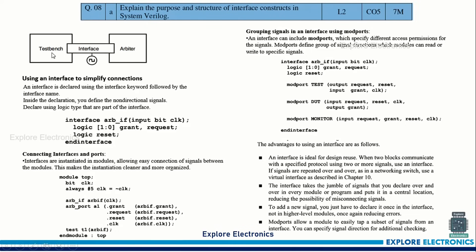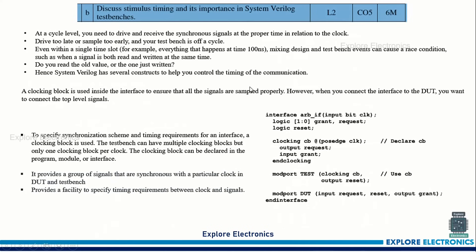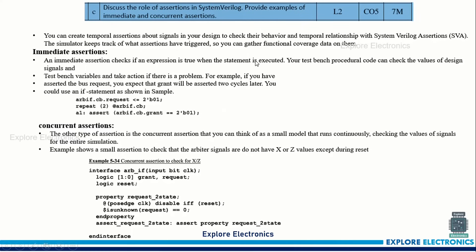Then: explain the purpose and structure of the interface construct in SystemVerilog. The interface is used to communicate between the test bench component and the DUT. You need to explain how the interface is defined — it is not of type module or class, it is an interface type itself. The signals of the DUT are represented with logic. The concepts of modport and clocking block can also be explained. Regarding stimulus timing and its importance in the SystemVerilog test bench, explain how the clocking block and clocks are useful in the interface.